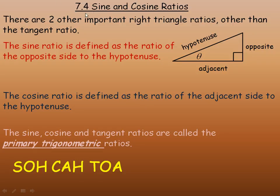In this lesson, we'll take a look at the other two primary trigonometric ratios called the sine and cosine ratios.